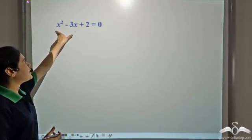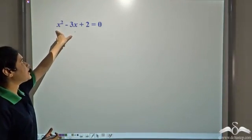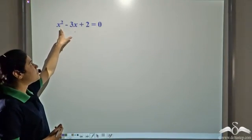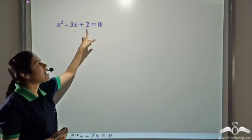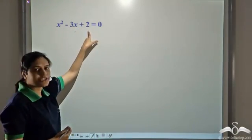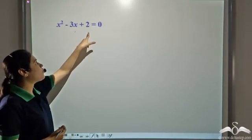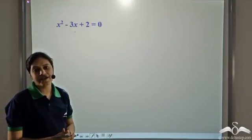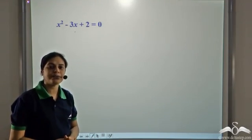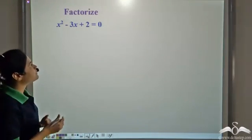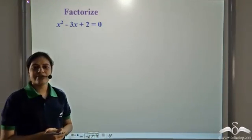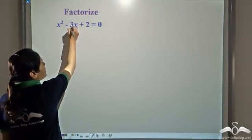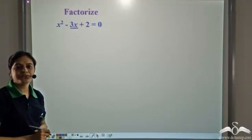We see that the left hand side is a quadratic polynomial. It has an x squared term, a term containing x, and a constant term. So it is a quadratic polynomial. We have learnt how to factorize polynomials of this type. So let us factorize the left hand side by splitting the middle term.